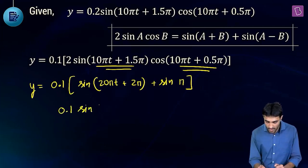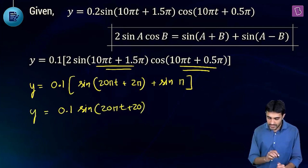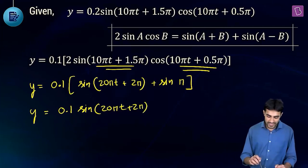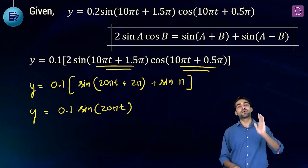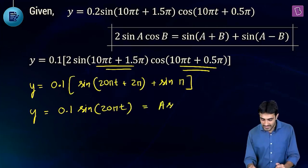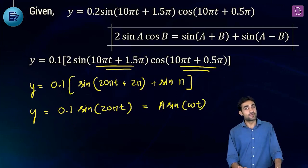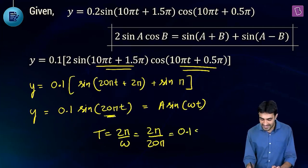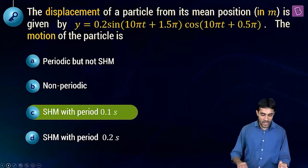So we have 0.1·sin(20πt + 2π). Now, sin(θ + 2π) = sin θ, so we can remove the 2π. This gives y = 0.1·sin(20πt). Comparing with A·sin(ωt), the time period is 2π/ω = 2π/(20π) = 0.1 seconds. So this is simple harmonic motion with time period 0.1 seconds — we mark option C.